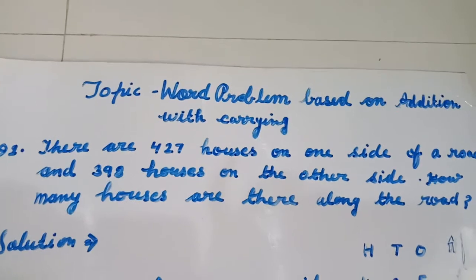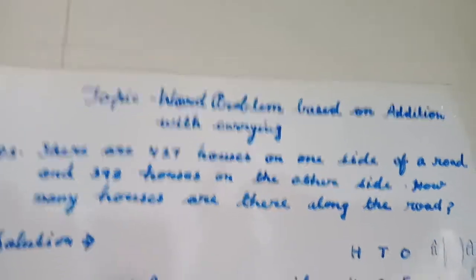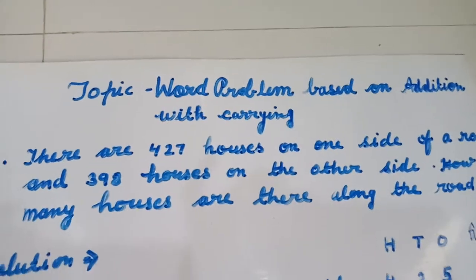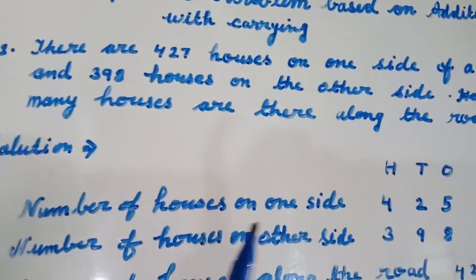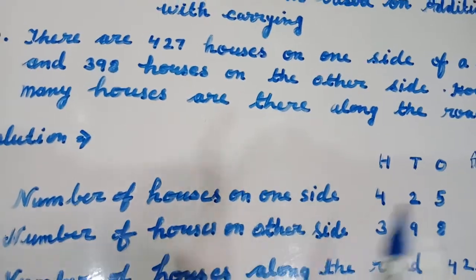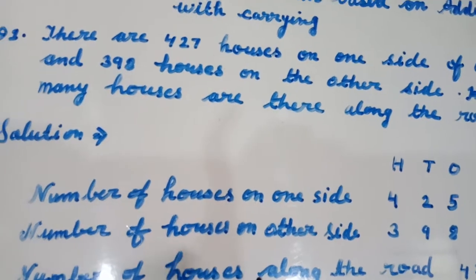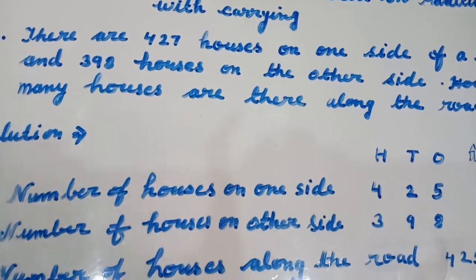Now we will write what is given in this question. Number of houses on one side: 425. Number of houses on other side: 398.